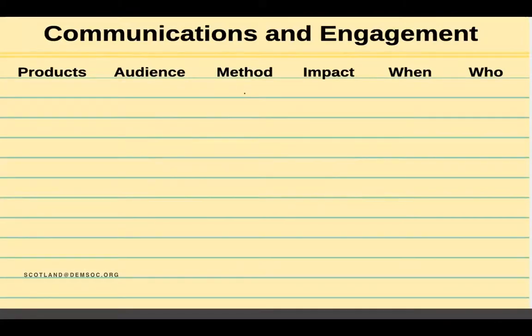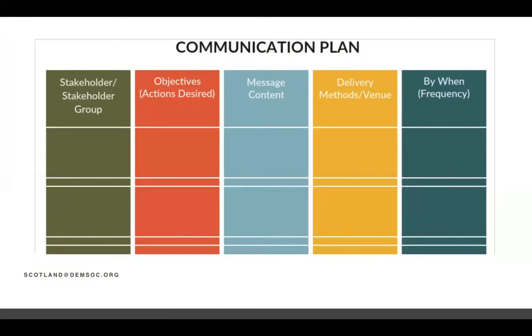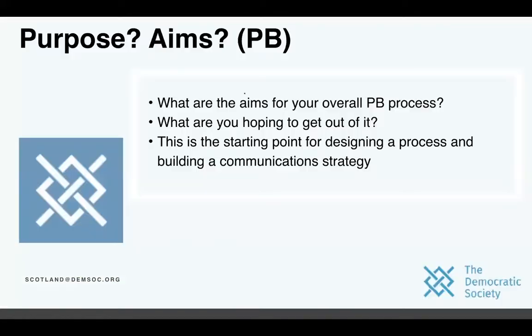Here's another example where you can write a list: products — what types are you creating, blogs, written or video materials? Who is your audience — groups or specific individuals you want to target? The method — how you'll do it — and the impact you want to have on these groups, plus when and who is responsible. Another example includes stakeholders, desired actions, content, delivery, and by when.